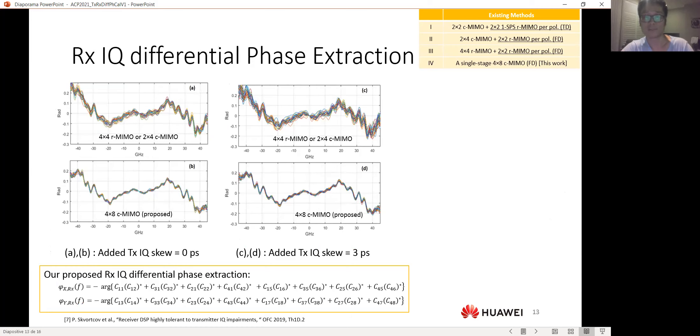For the receiver IQ differential phase extraction, we performed a similar experiment. And first, we just measure over 30 SOPs the differential phase. We found that our approach showed a very stable result over 30 SOPs, while the other existing approach seems to have more problems.